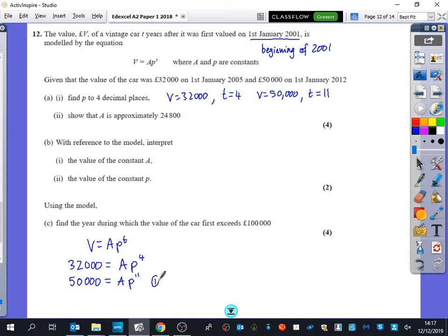Now if I take this equation here, number one, and this equation here, number two, if I do equation two divided by equation one, on the left-hand side I would have 50,000 divided by 32,000, which is 25 over 16. I would have AP to the power of 11 divided by AP to the power of four. The A's would cancel and P to the power of 11 divided by P to the power of four is P to the power of seven. So to work out what P is, I can do 25 over 16. I can take the seventh root of it. I can do it to the power of one over seven. And we get that P is equal to 1.0658 and that's to the four decimal places that it wanted us to do.